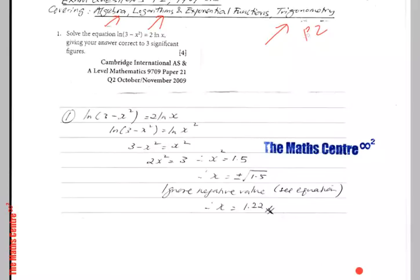P2 Pure Maths, subject code 9709. So let's start slowly. Question number one.